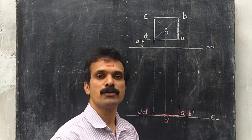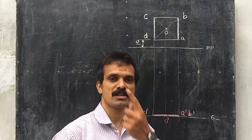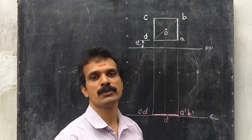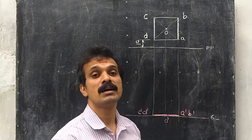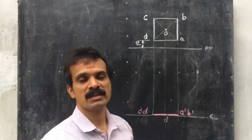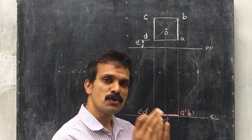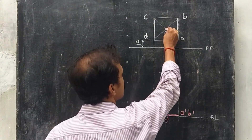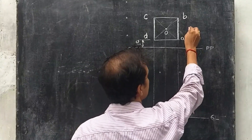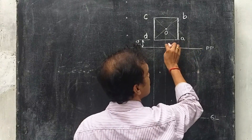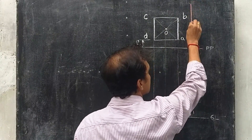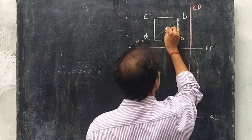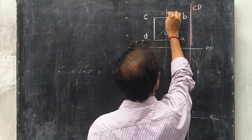Now we have to fix the station point, which is the eye of the observer. For locating the station point, first we draw the central plane. It is given that the central plane is 20 mm to the right of the center of the square. So from the center point, draw a line 20 mm towards the right — that line is the central plane CP — and this distance will be 20 mm.